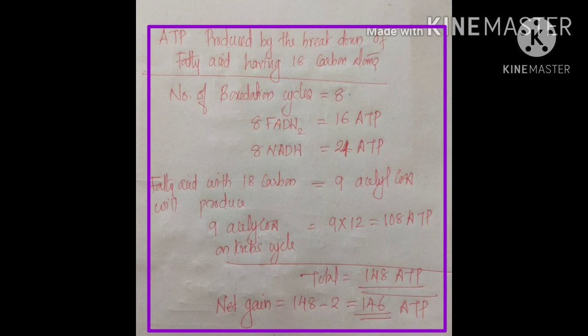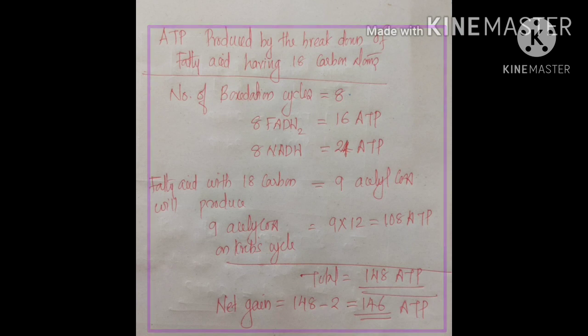An 18-carbon fatty acid produces 9 acetyl-CoA in total. Each acetyl-CoA enters the Krebs cycle, and each round of Krebs cycle produces 12 ATP. So 9 acetyl-CoA × 12 = 108 ATP. The total gross ATP is 16 + 24 + 108 = 148 ATP. Subtracting 2 ATP consumed in fatty acid activation gives a net of 146 ATP.